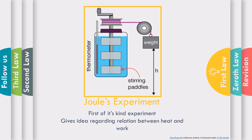Now let us study Joule's experiment. In Joule's experiment, we have stirring paddles and a thermometer. A string and a pulley are used, and self-weights are attached. Inside a beaker, some amount of liquid is stored. When we release the weight from a height in a downward direction, the stirring paddles start rotating as a result of the mechanism used.